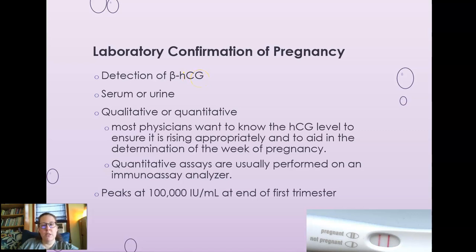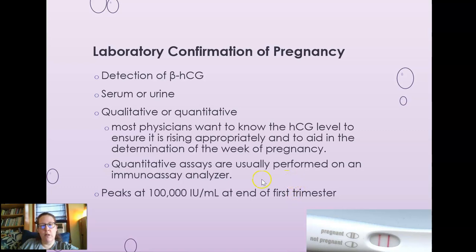The qualitative test gives a positive or negative result. Quantitative HCG gives a specific level, which most physicians want early on to see if HCG is rising appropriately and to determine how far along the pregnancy is. Quantitative assays are usually performed on an immunoassay analyzer. HCG will peak at 100,000 at the end of the first trimester, rising quite high before leveling off and then declining.